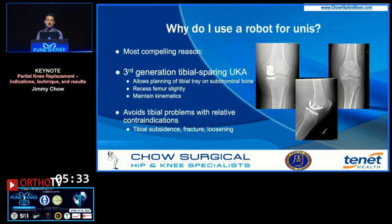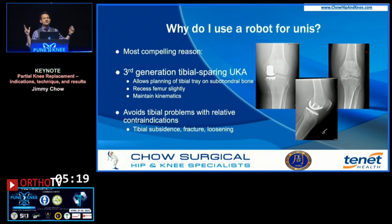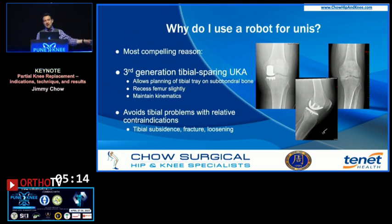The most compelling reason I'm talking about this is the third generation tibial sparing uni. If the partial knee replacement is going to fail, historically that has always failed with respect to tibial subsidence, tibial fracture, and tibial loosening — they are tibial problems. Aside from some select designs that had femoral failures, those are poorly designed implants. We are specifically talking about the large body of partial knee replacements.